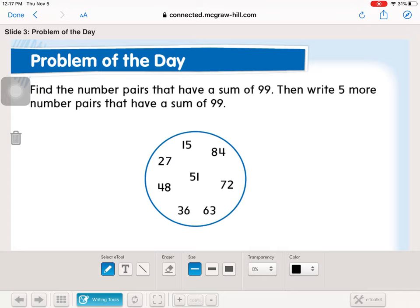Since we won't need to regroup necessarily, we can just look at the ones and find ones that equal nine and then tens that equal nine. So let's see, we have 84 and 15, 4 and 5 is 9, 8 and 1 is 9.